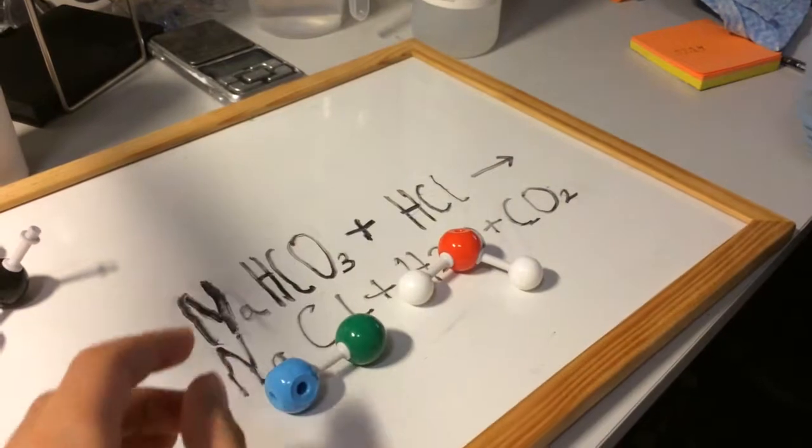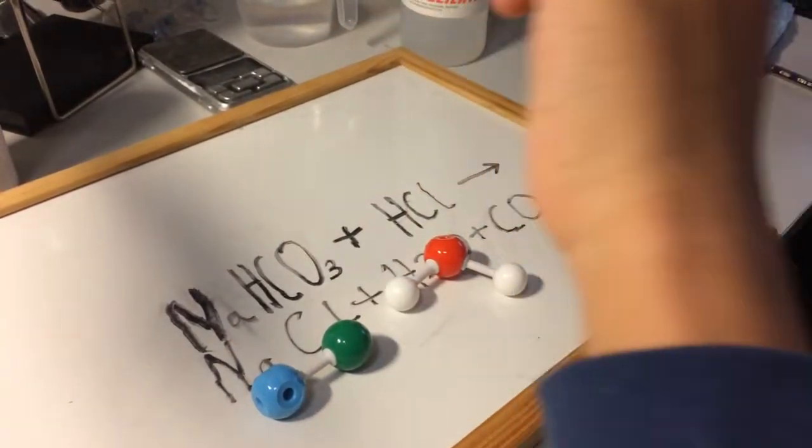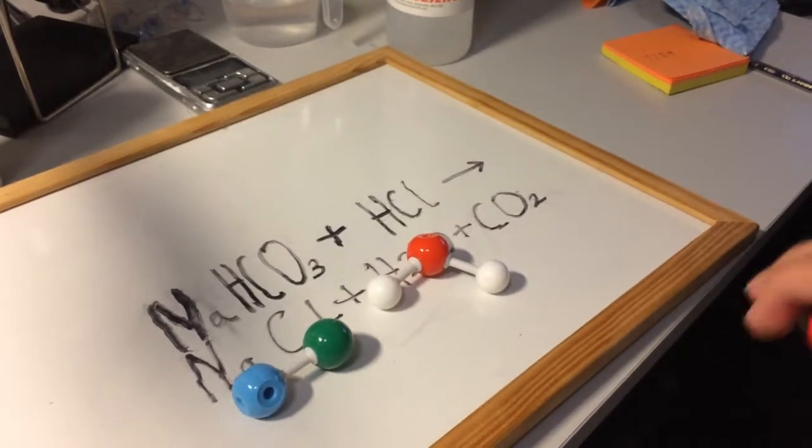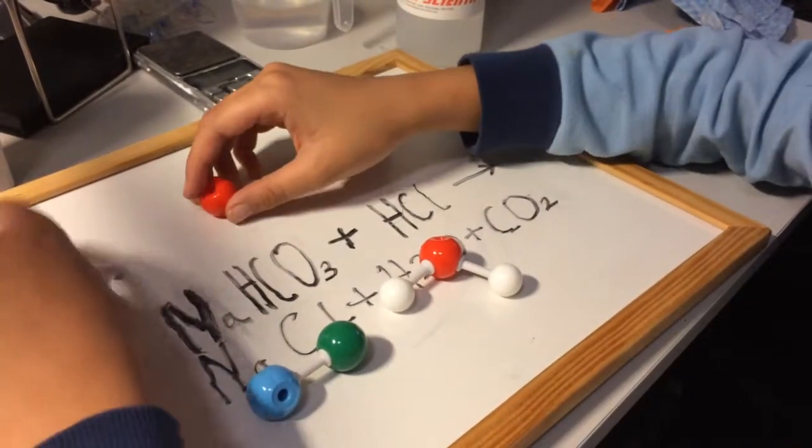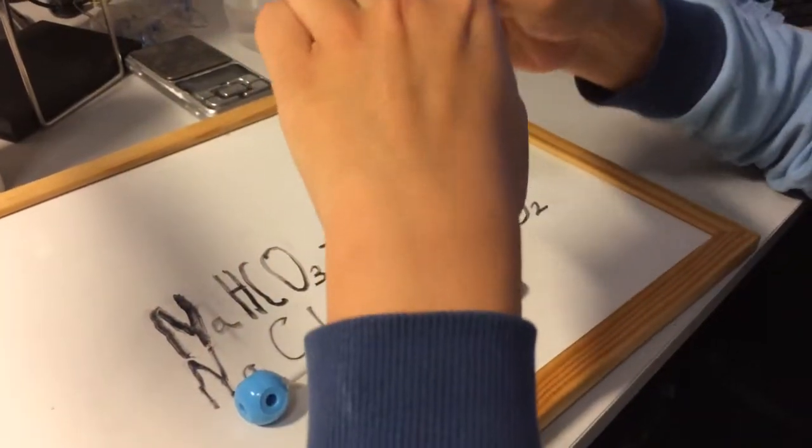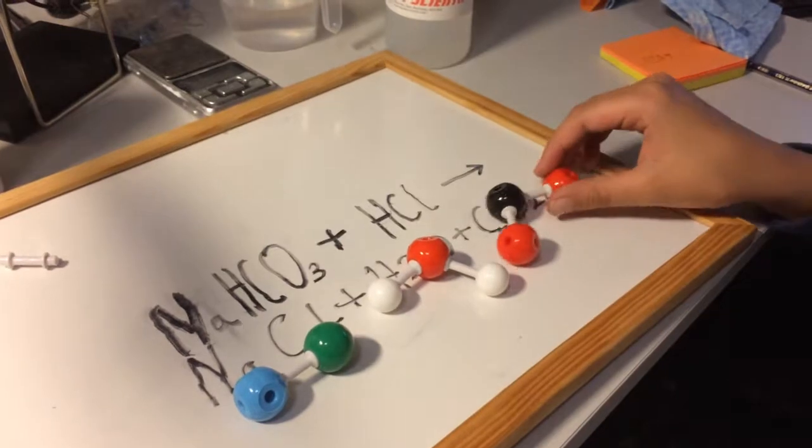Lastly we got CO2, also known as carbon dioxide. It is made out of one carbon atom and two oxygen atoms.